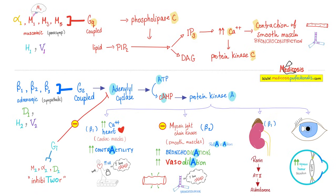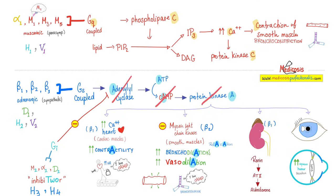How about H2? H2 is GS coupled, which increases cyclic AMP. In your stomach, when you increase cyclic AMP, you're going to release more hydrochloric acid. We also have H3 and H4 histamine receptors, and they are GI coupled — 'I' stands for inhibitory. GS-coupled receptors stimulate adenylate cyclase, whereas GI-coupled receptors inhibit adenylate cyclase. When you inhibit adenylate cyclase, ATP will not become cyclic AMP and will not give us protein kinase A.